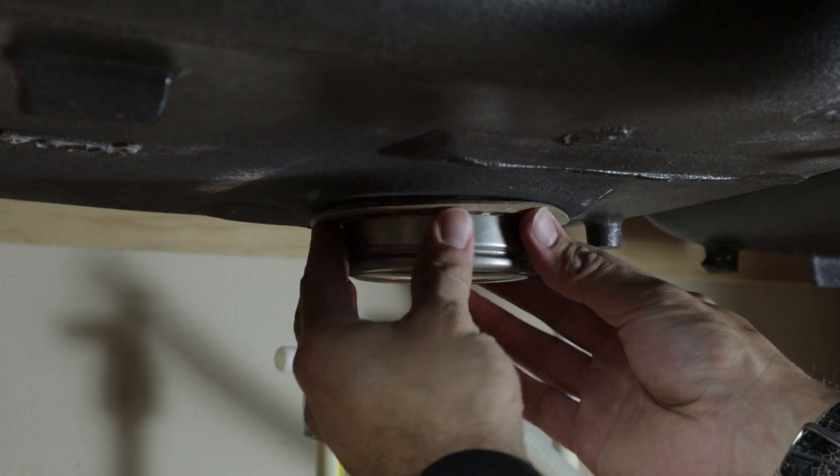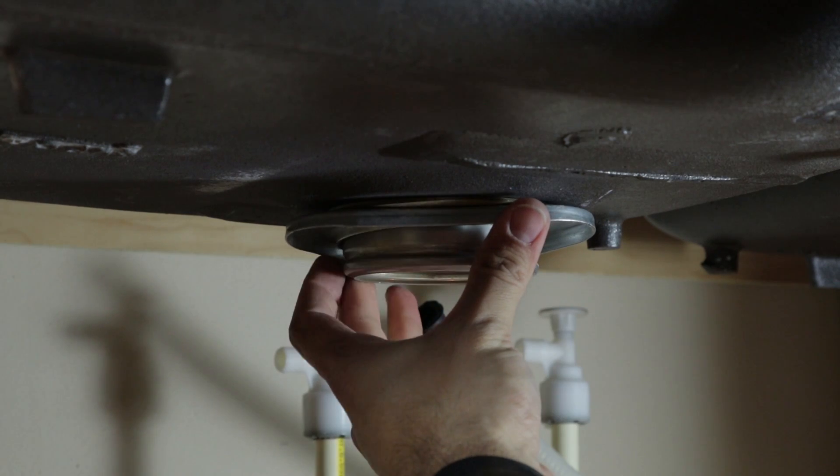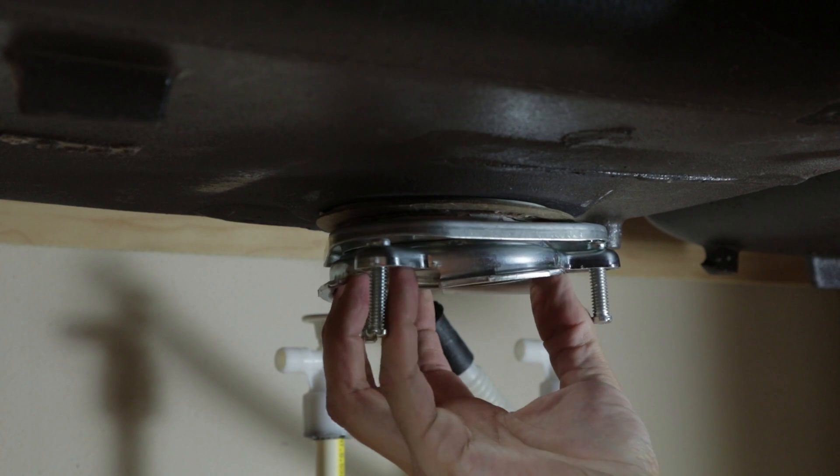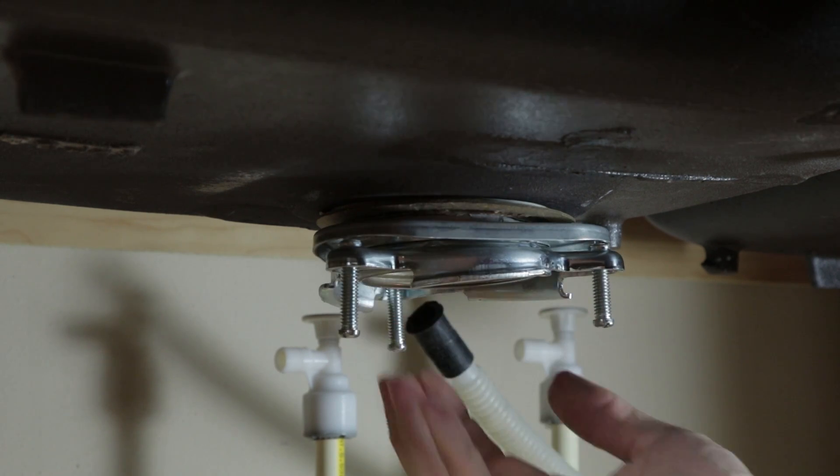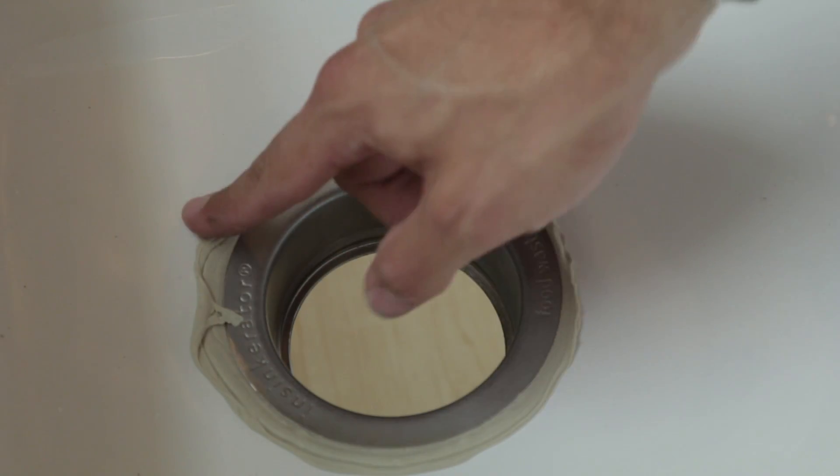With the sink flange in place, slide on the paper gasket. Then slide on the backup flange and mounting ring. Slide on the snap ring to secure. Tighten down the bracket screws and remove any excess putty from the sink.